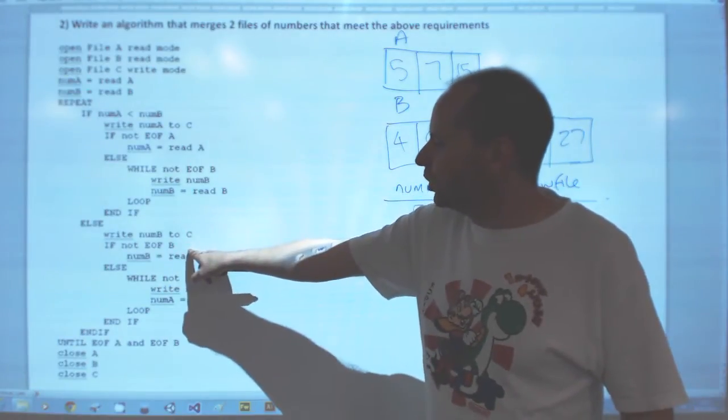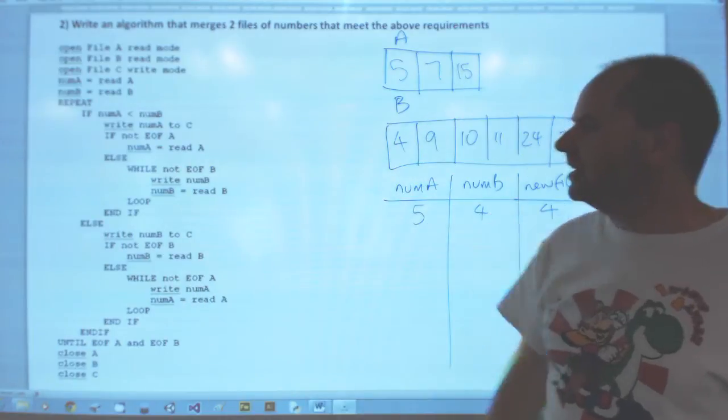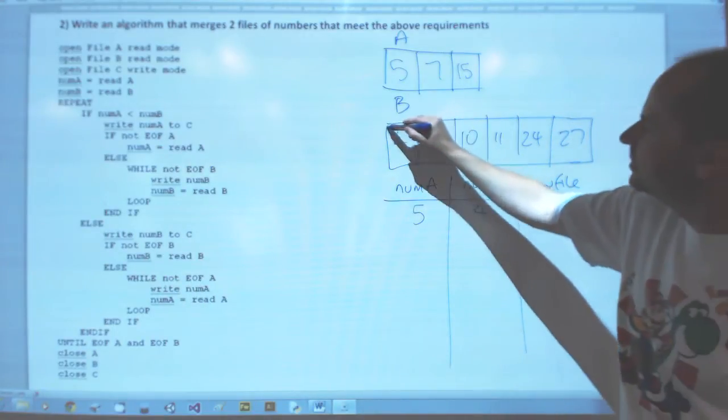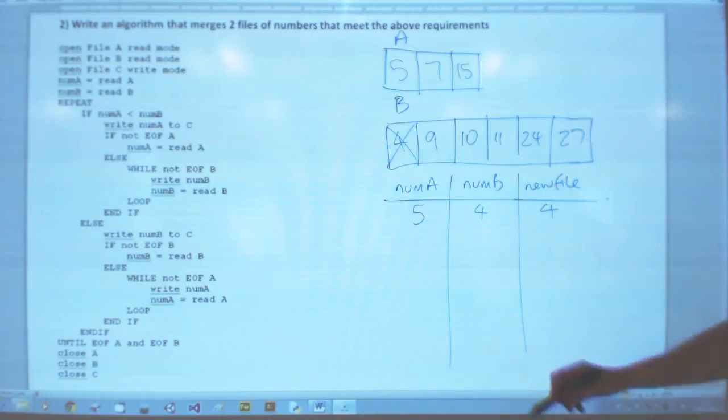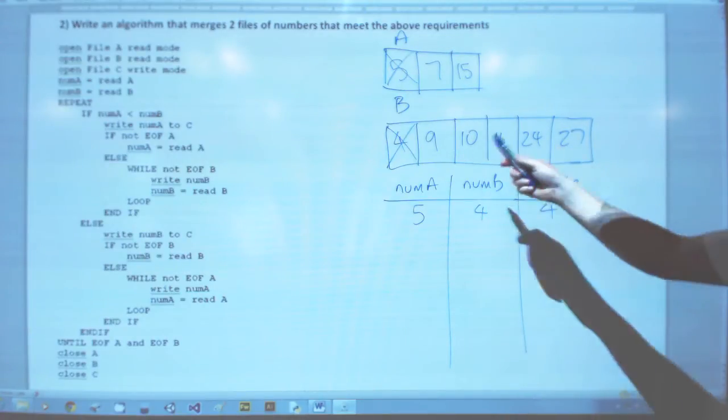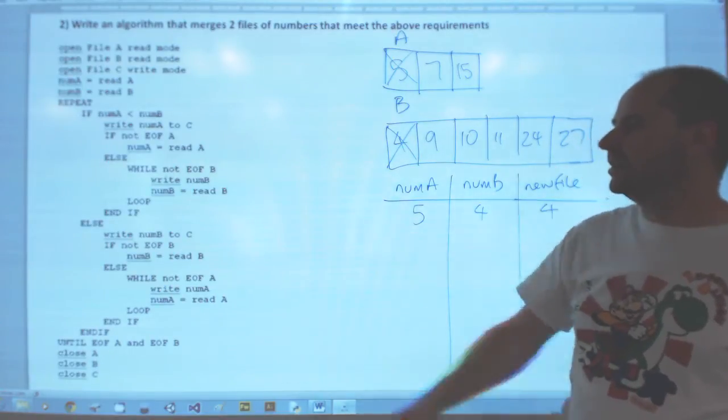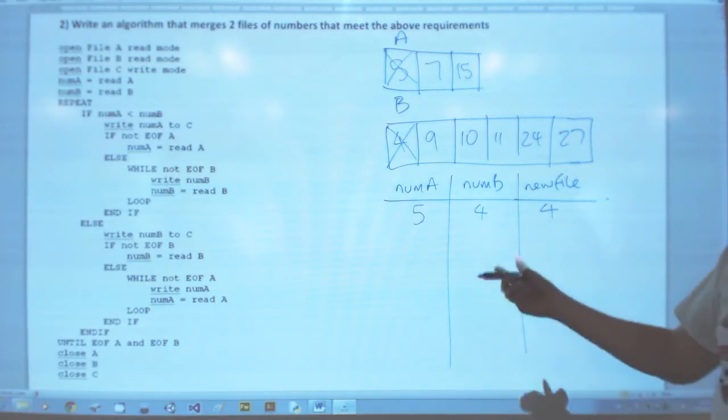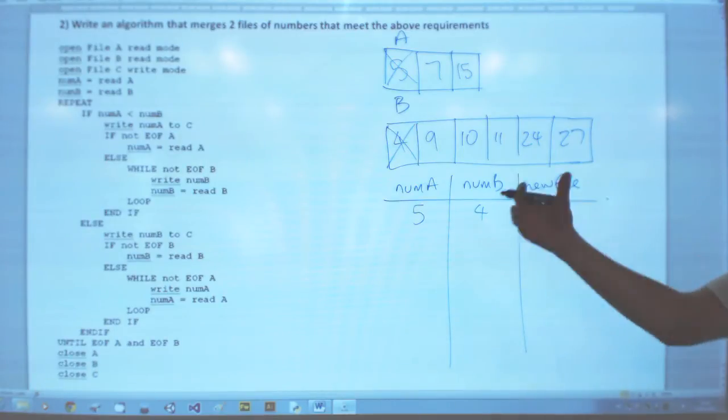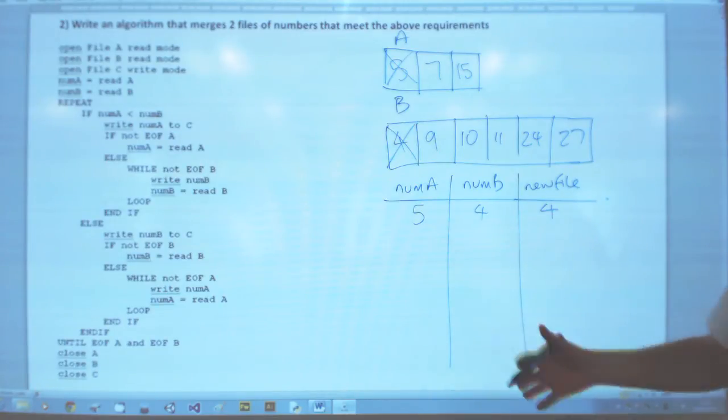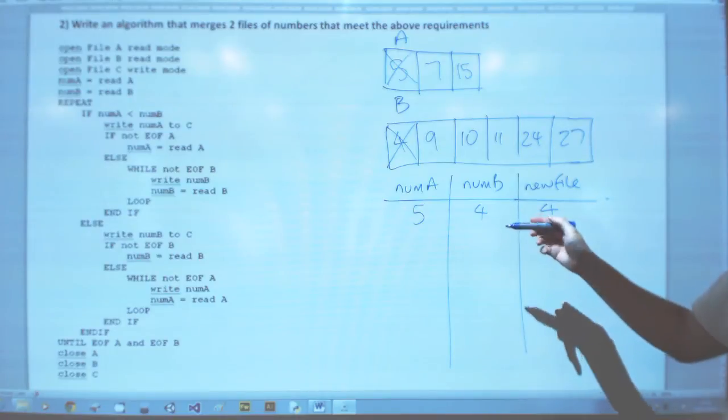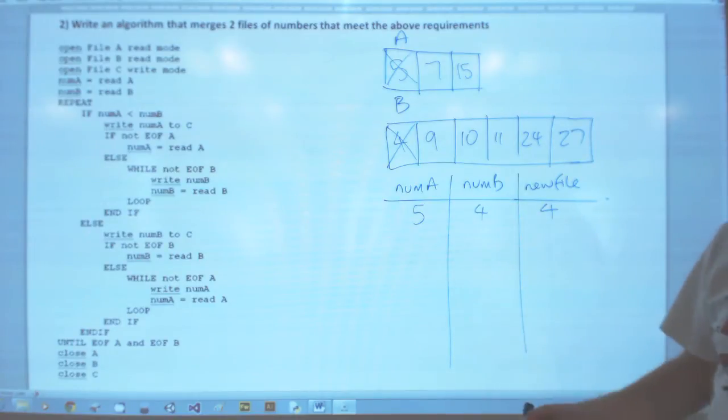So if number B is smaller, we then need to get another item from B. So we've read that one, cross that one out as well. This will only work if we've actually got data in the file, so we do a test for end of file. If we haven't got end of file, let's read something in. Now how you'd implement that in code depends on the language and the environment you're using. But this is just the algorithm, the process that needs to be gone through.